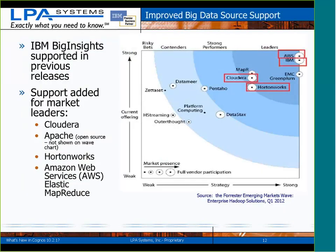Moving on to big data — the big data news really boils down to IBM choosing to support the market leaders in the Hadoop world as data sources for BI. So Cloudera, Hortonworks, AWS — IBM Big Insights has been supported since Hadoop support was introduced, but the market leaders per the Forrester wave are now supported. Apache open source is also now supported as a data source within the 10.2.1 release. So for those of us who have those data sources, this is welcome news.